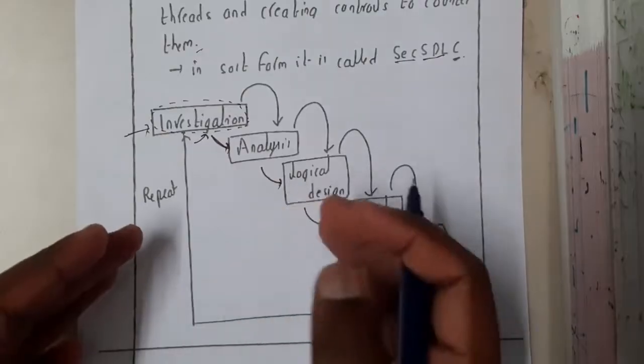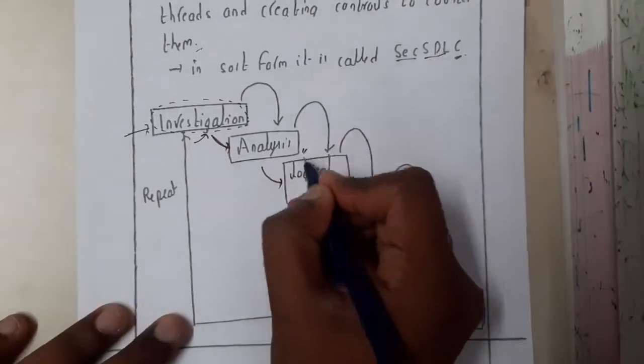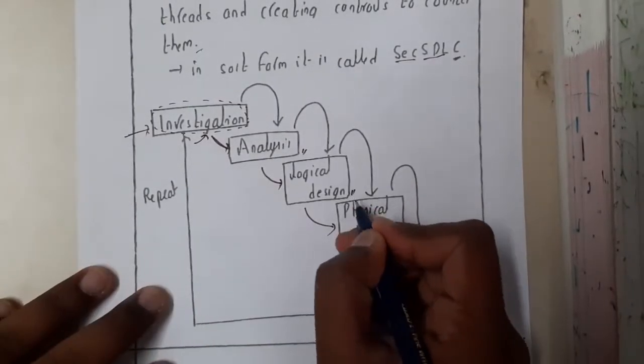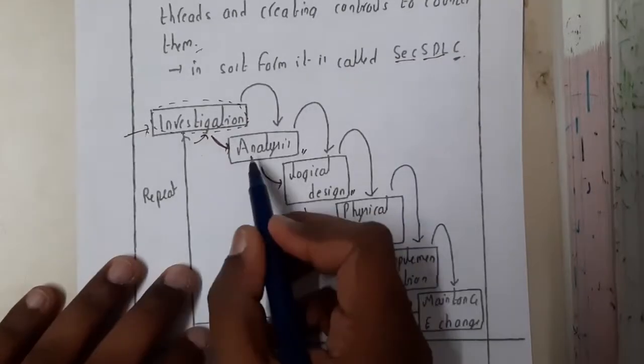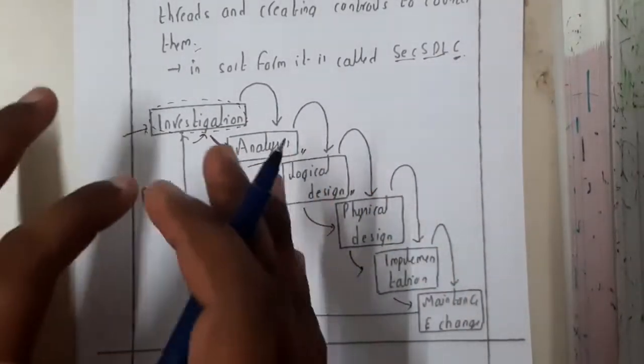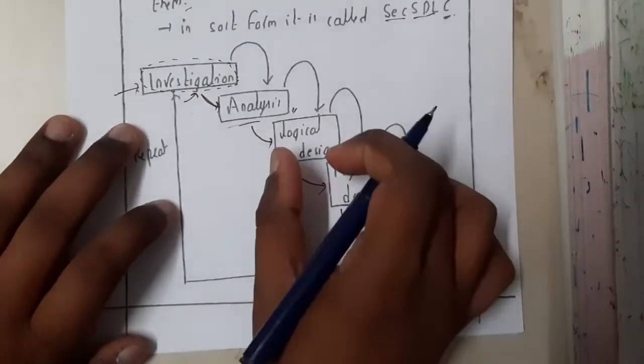Once your analysis is done, then you will be doing some designing. So till now you understood everything. Now you need to design something so that it will be omitting that attack. So that is nothing but your logical design. Once the logical design like in computer or somewhere on paper or some kind of blueprints, so those things once you have drawn you can move on to physical design.